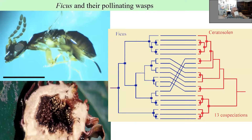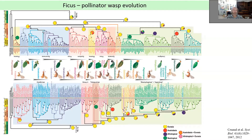There is also Trollius and Chiastocheta anthomyiid flies in the temperate zone, and a tropical system with Glochidion trees and a small lineage of Gracilariidae moths of the genus Epicephala. When we look at ficus species — this is the phylogeny of fig species and the phylogeny of their pollinating wasps — there are statistically significant numbers of cospeciations. Except for one shift, it perfectly mirrors the evolution of ficus and the pollinating wasps.